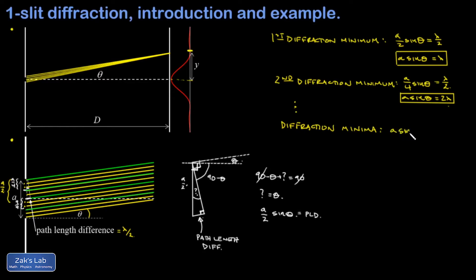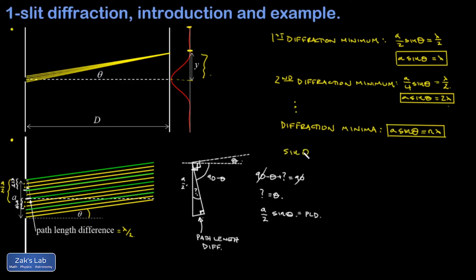With slit width a, I see dark spots at angles where a sine theta equals n lambda, for whatever light we're using. There's a useful way of reworking this in terms of experimental parameters. What we usually measure in the lab is the actual y value — the distance between the center of the pattern and the first, second dark spot, and so on. Since we're typically dealing with fractions of degrees, the small angle approximation applies: sine theta is approximately equal to the tangent of theta, which equals y over D. Substituting, we get a times y over D equals n lambda.